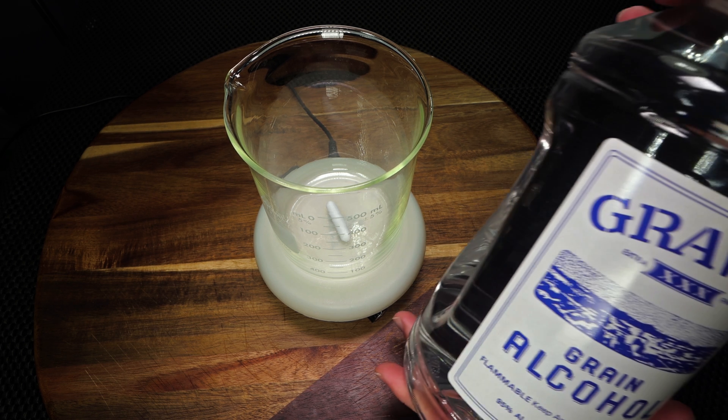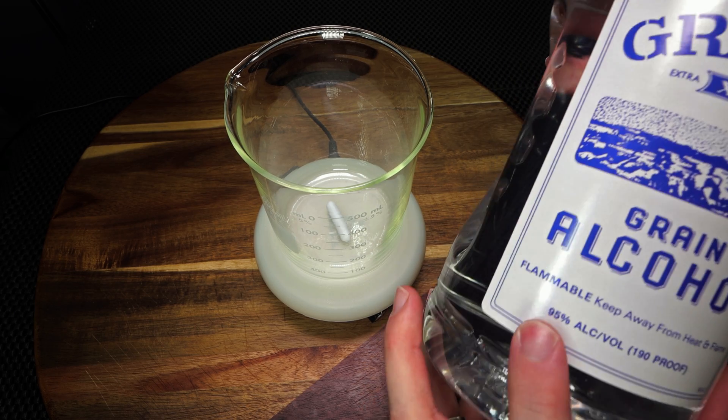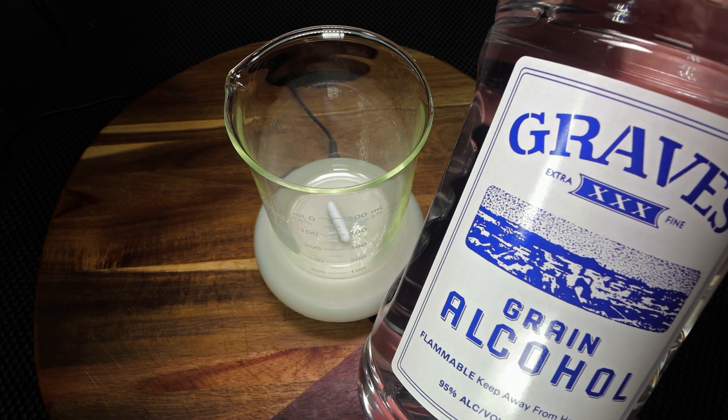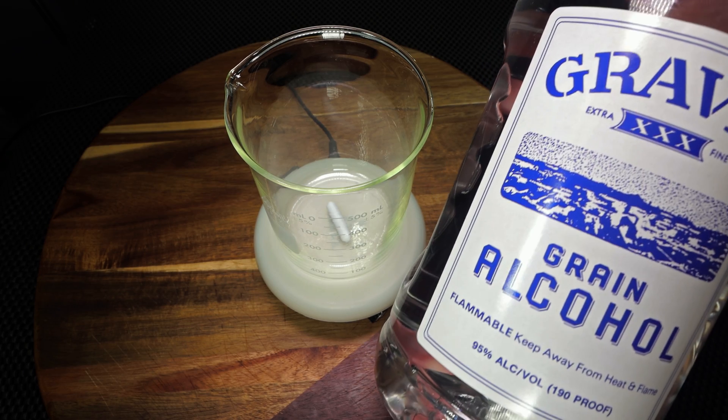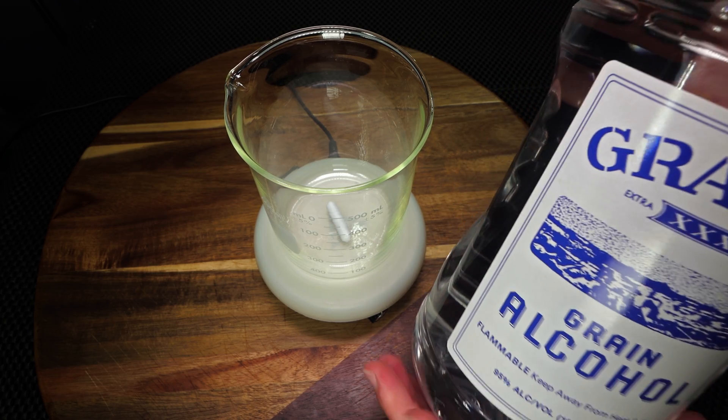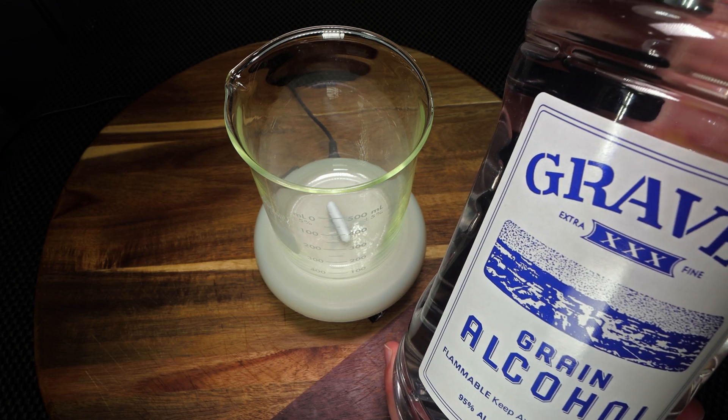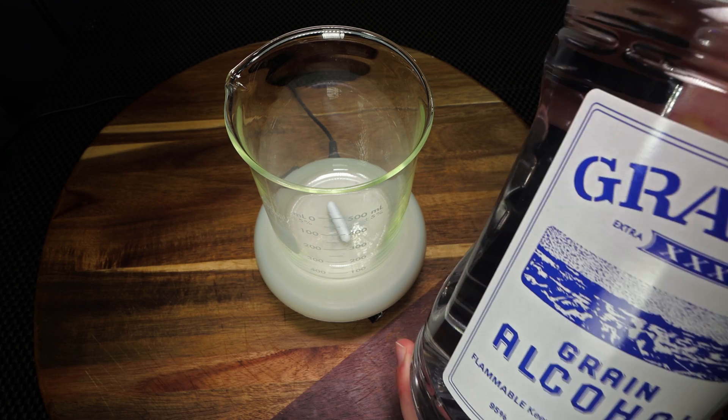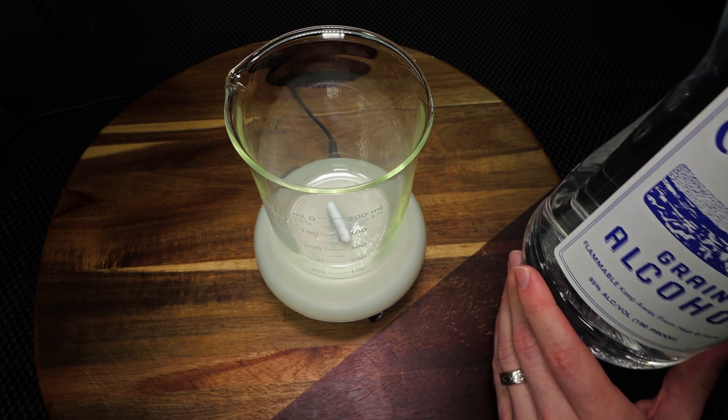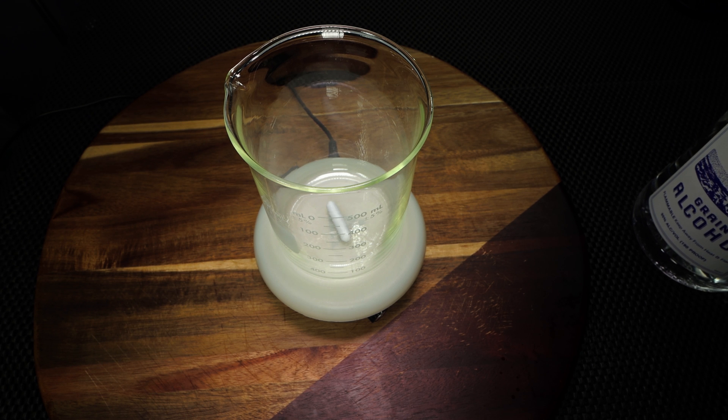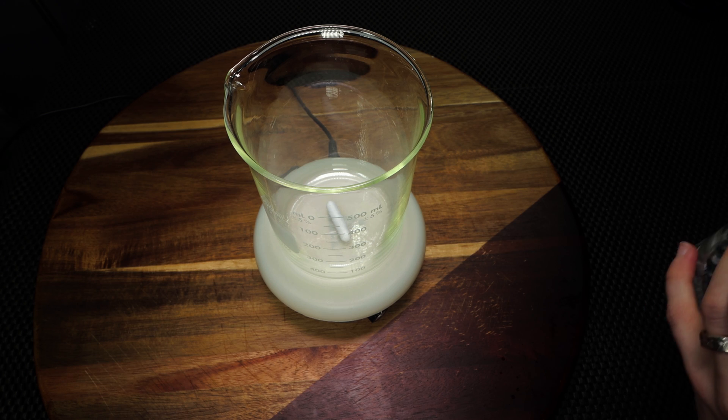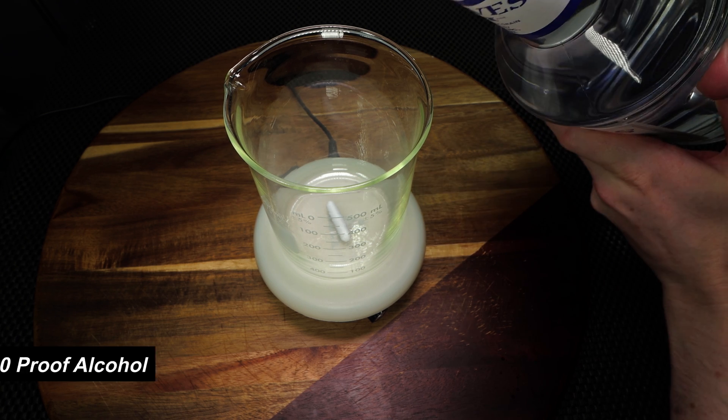So the very first thing you're going to need to do is have some alcohol. You're going to want to have alcohol that's 95% alcohol per volume. This is an ethanol Graves Grain alcohol, which is 190 proof, and this is the exact strength that I'm going to want to have. You do not need to get ethanol. You can get isopropyl alcohol, but you just need to be able to get what's available to you. So in order to make this 500ml batch, we're going to first start off by pouring approximately 445ml of the grain alcohol into our beaker. I'm going to pour that for you right now.